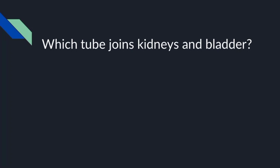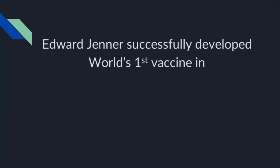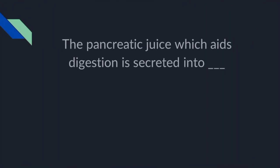Which tube joins the kidneys and the bladder? Ureter. Edward Jenner successfully developed the world's first vaccine in 1796. The pancreatic juice which aids digestion is secreted into the duodenum.